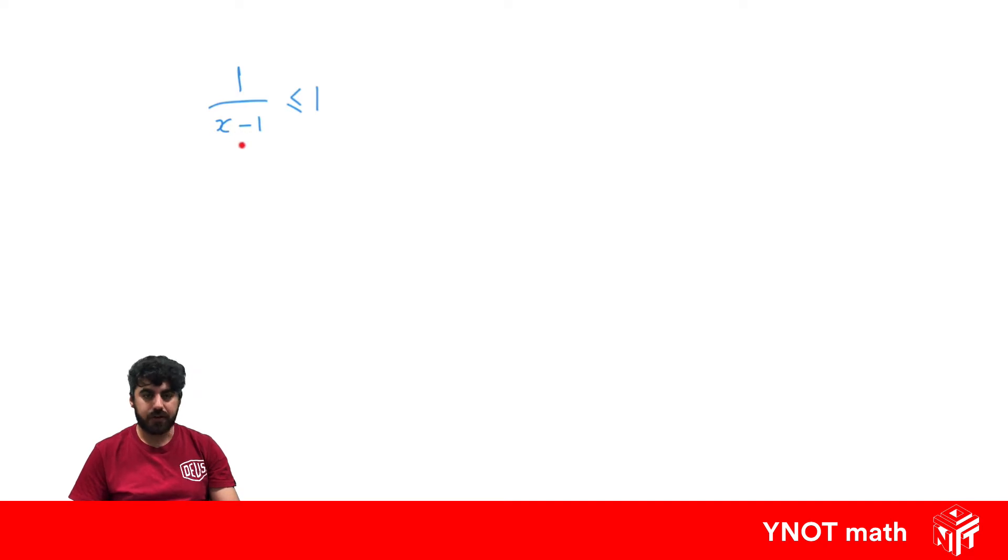But because there's an unknown in the denominator, we don't know if this denominator is going to be positive or negative, which means when we multiply both sides by it, we don't know if we should keep the inequality as less than or equal to, or flip it and make it a greater than or equal to.